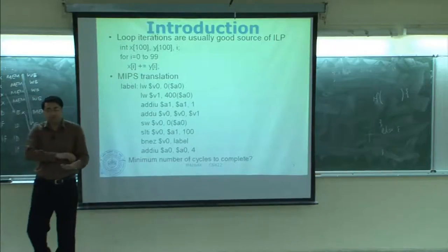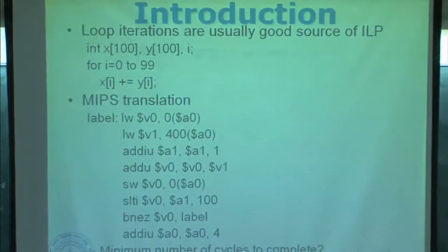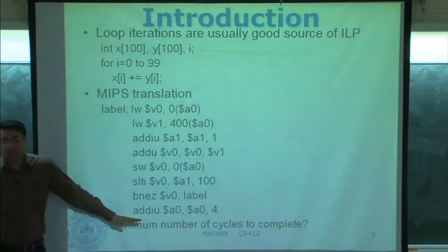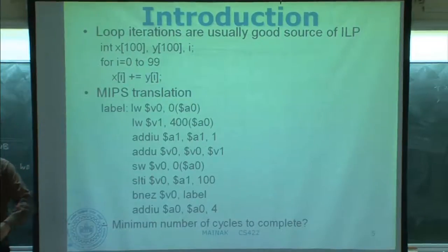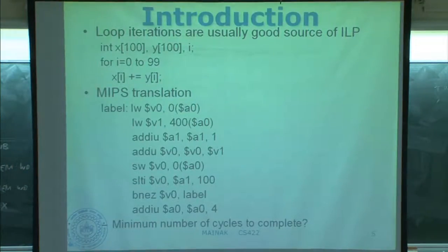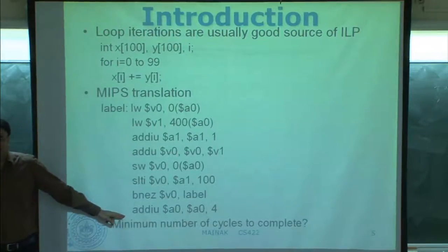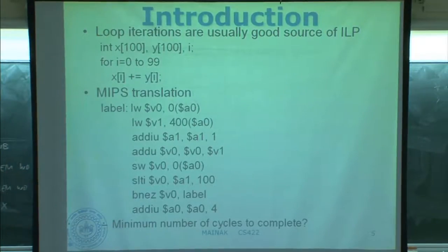If the predictor tells you something wrong, your instruction pool gets populated with useless instructions. Eventually your branch will resolve and you will get to know the predictor said something wrong. You have to cancel everything, flush everything from your instruction pool and start over. The compiler removes that particular condition by analyzing the code and telling you this code can be unrolled to get good ILP.